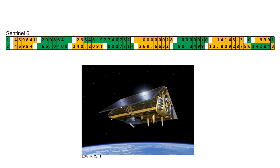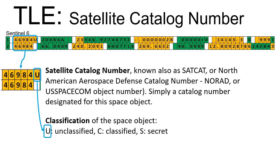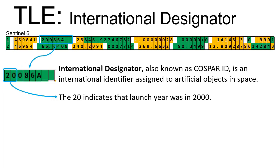First is the satellite catalog number designated for this particular space object. Letter U means that the space object is unclassified. International Designator, also known as Cospar ID, is an international identifier assigned to artificial objects in space.